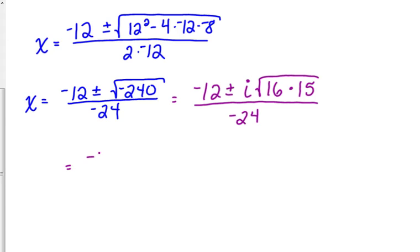Now, the square root of 16 is 4, so that comes out of the square root in front of the I. 15 is not a perfect square, so it stays.